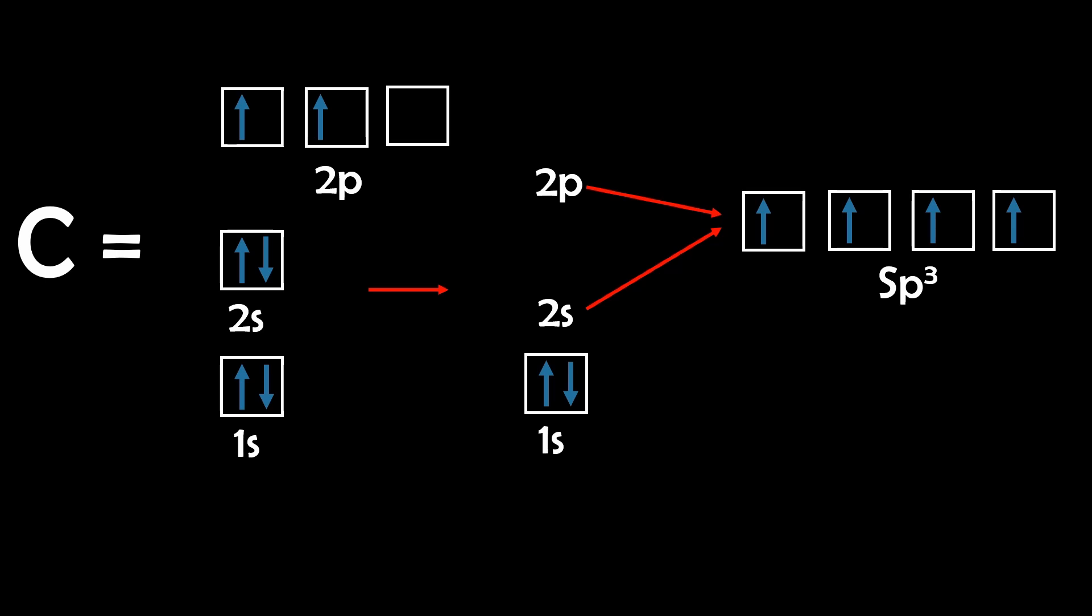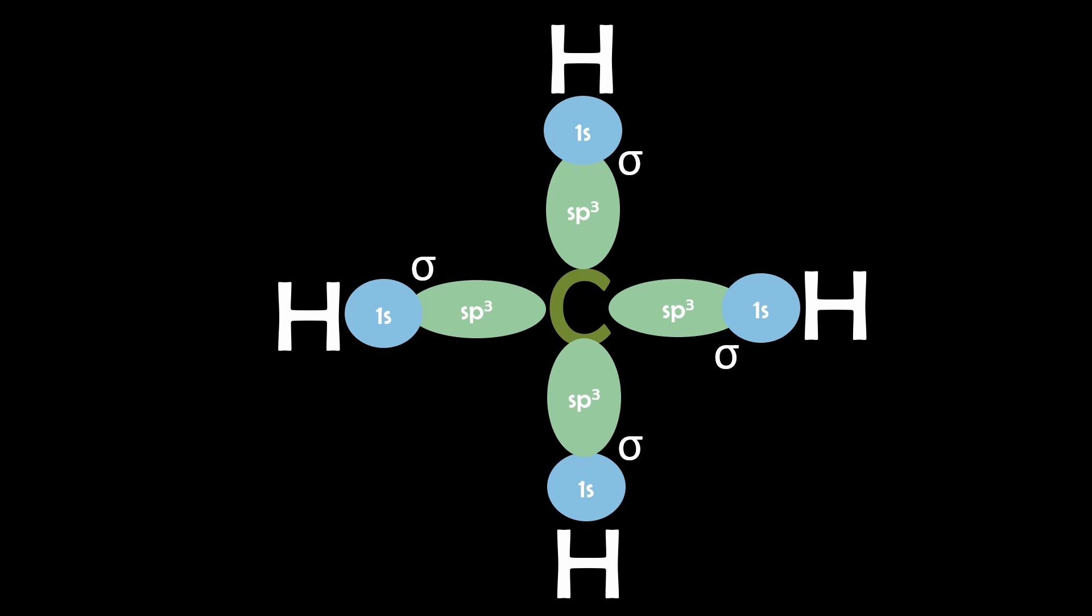Each bond then has a mixture of one S and three P orbitals, meaning that each bond has 25% S character and 75% P character. And again, we get a structure that makes sense.